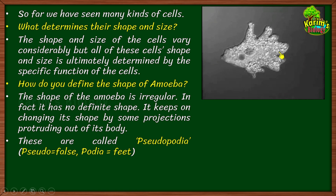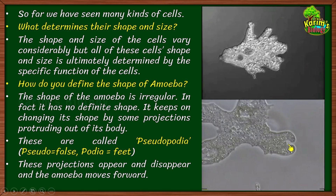The finger-like projections protruding from the surface of amoeba appear in the form of feet — that is why they are called pseudopodia, meaning false feet. These pseudopodia appear and disappear as the amoeba moves forward. They are useful not only for movement but also for intake of food. Amoeba slowly forms finger-like projections around a food particle, these pseudopodia fuse together, and ultimately a small food vacuole is formed. The food is then taken into the cell where it will be digested — that is another important use of pseudopodia.